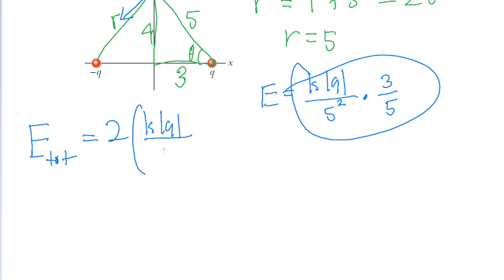So 2 kq divided by 5 squared multiplied by 3 fifths. And that is going to be our final solution to this problem.